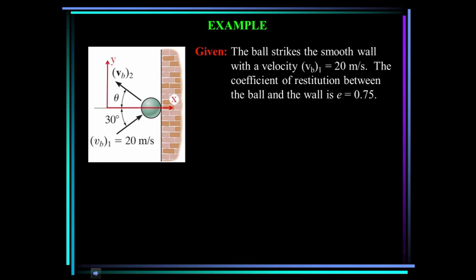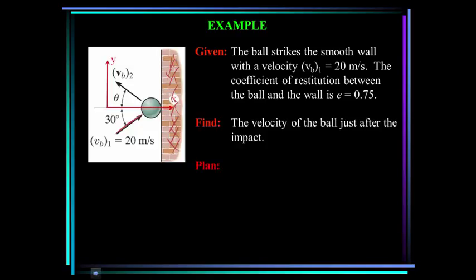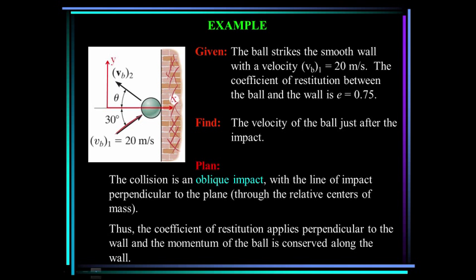Example: A ball strikes a smooth wall at a velocity of 20 meters per second at 30 degrees to the x-axis, with a coefficient of restitution of 0.75. We want to find the velocity of the ball after impact. The other particle here is the wall, and since the wall is much larger than the ball, its velocity after impact is zero. This is an oblique impact with the line of impact perpendicular to the wall plane. Momentum is conserved along the wall in the y direction, and we'll use the coefficient of restitution in the x direction.